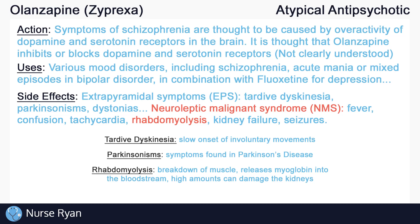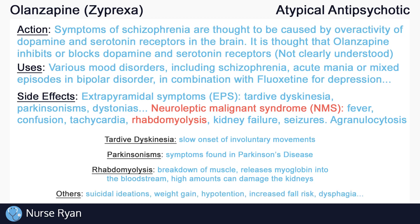Yet another possible side effect of olanzapine is agranulocytosis, which is a severely lowered white blood cell count and can be life-threatening. Regular blood work may be required to monitor white and red blood cell counts. Other side effects of olanzapine include suicidal ideations, weight gain, hypotension, which may present as dizziness and headache, increased risk for falls, dysphagia, and much more.